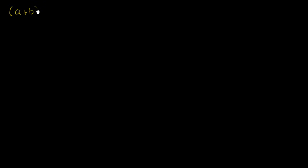It doesn't take long to realize that taking higher and higher powers of binomials can get painful. But let's just work through a few to realize how quickly they get painful. So if we take the binomial a plus b — it's a binomial because it has two terms — and take that to the 0 power, well anything non-zero to the 0 power is just going to be equal to 1. Well, that wasn't too bad.